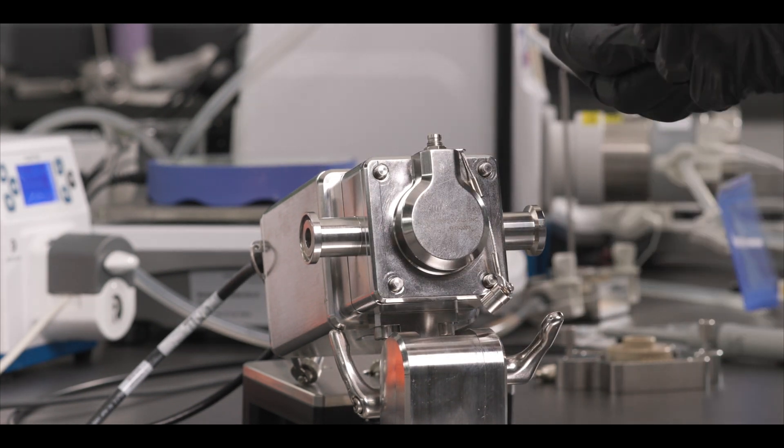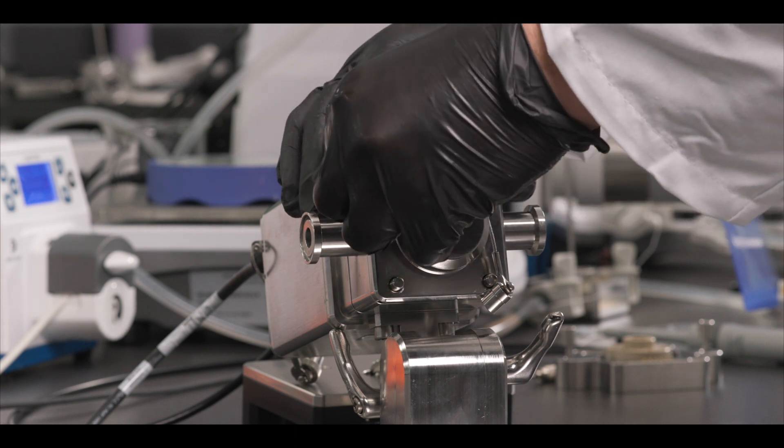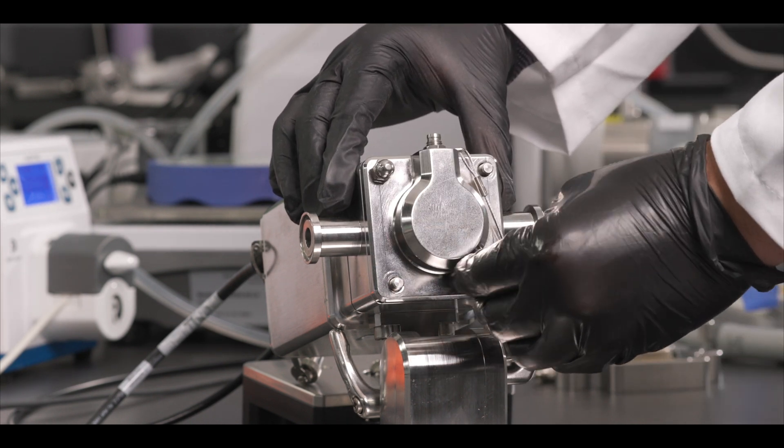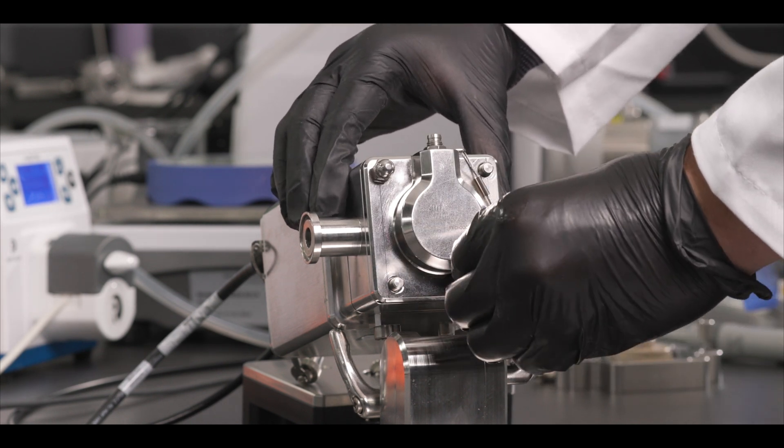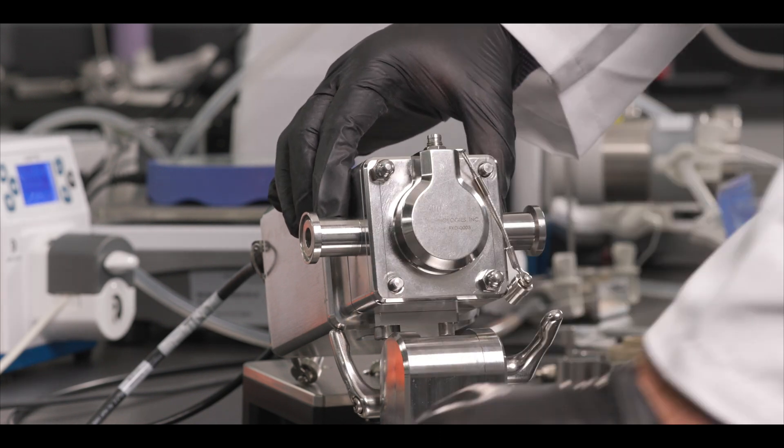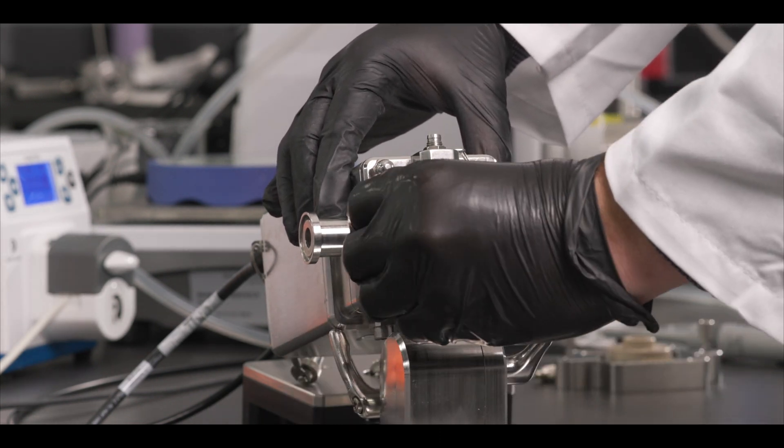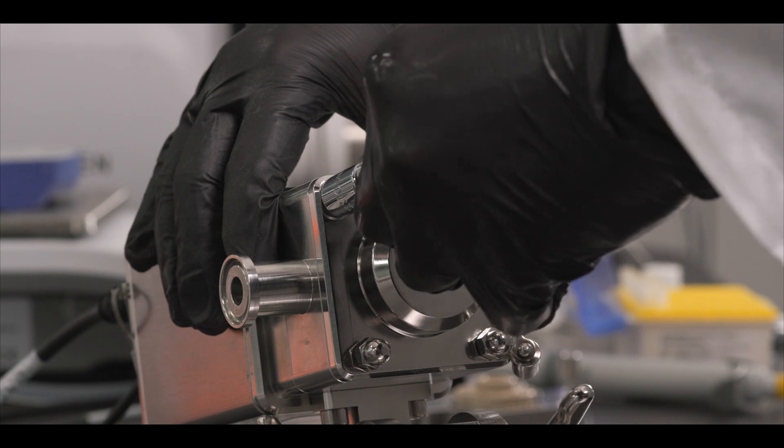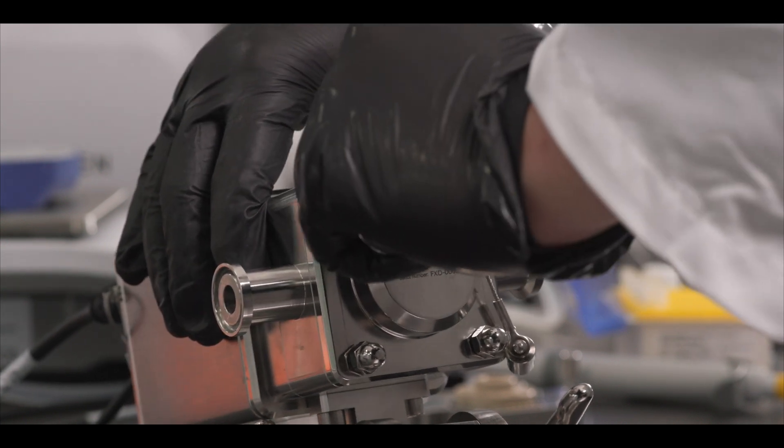Secure the flow cell detector in the FlowVPX with the four acorn nuts and tighten with the provided 40 pound torque wrench. Tighten in a diagonal pattern to equally distribute the torque.